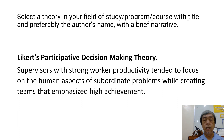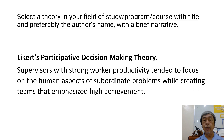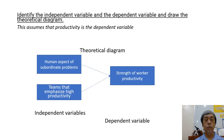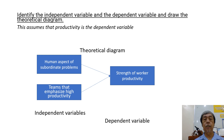This brief narrative of the theory is the basis for us to identify the independent and the dependent variables. So assuming that productivity is the dependent variable, this is now our theoretical diagram.